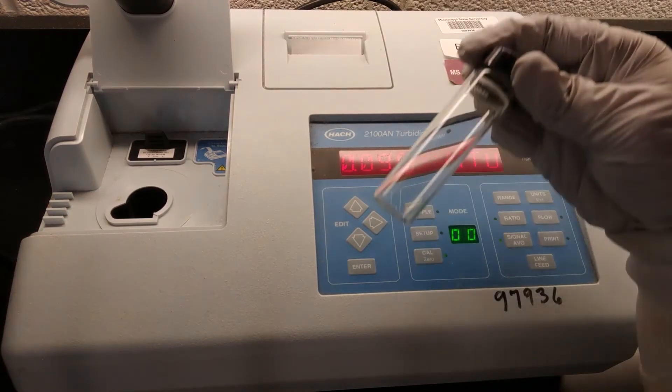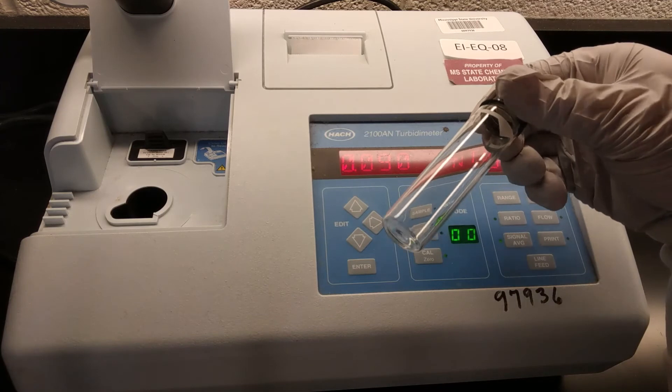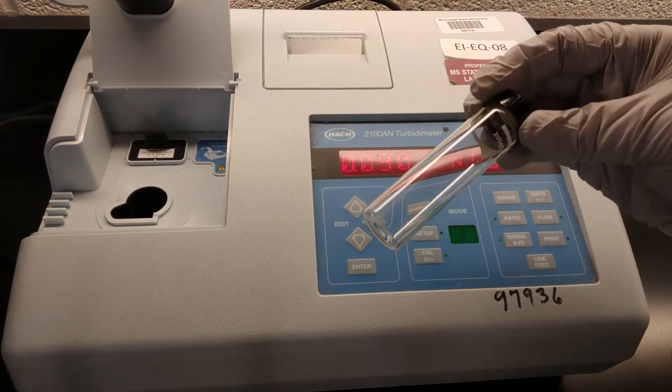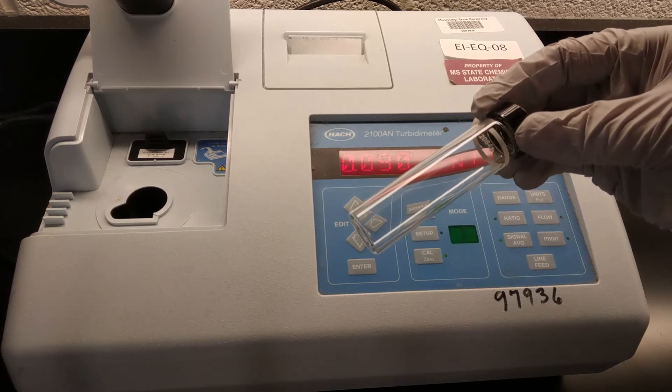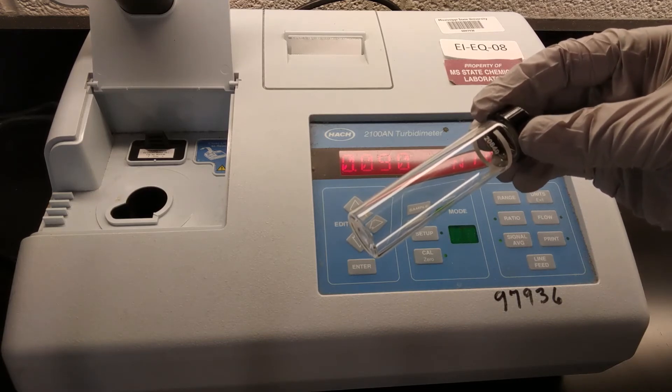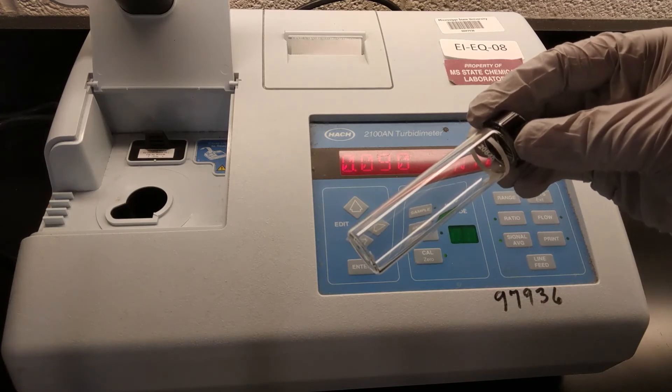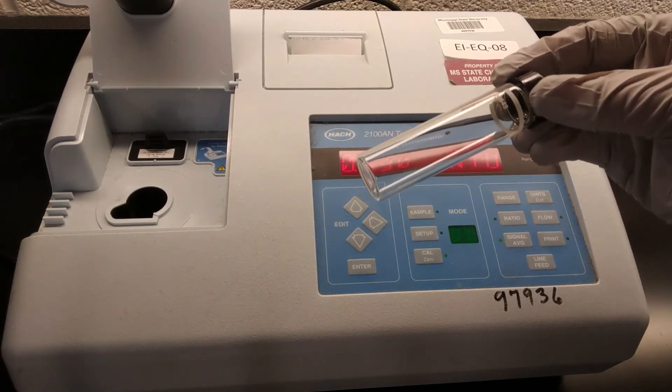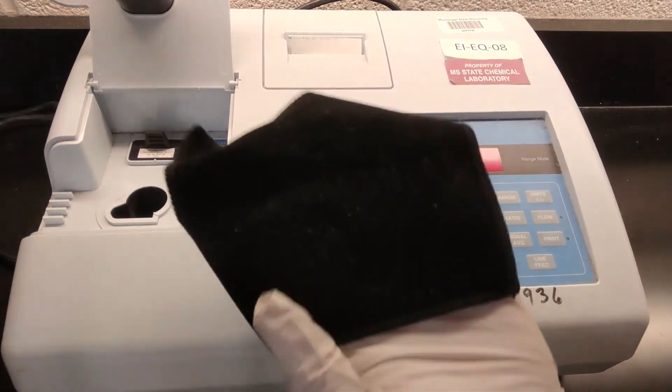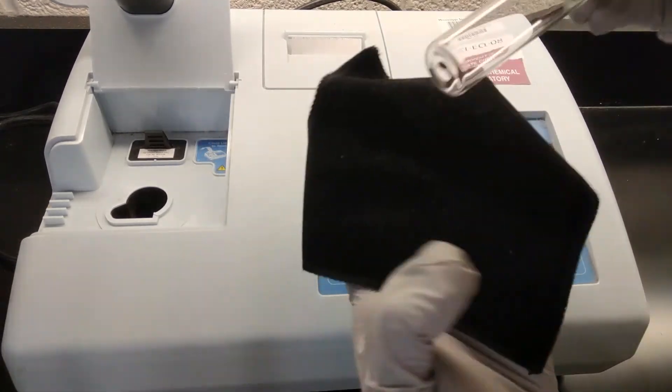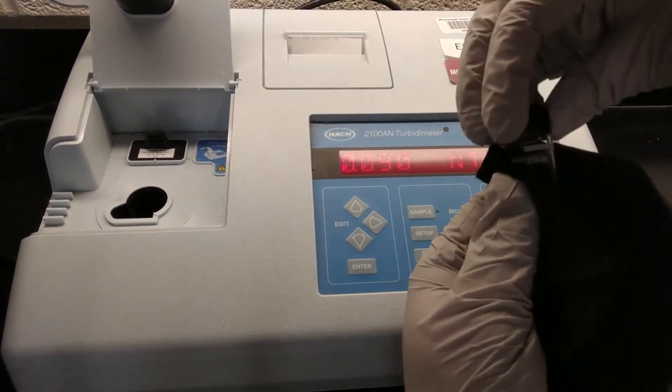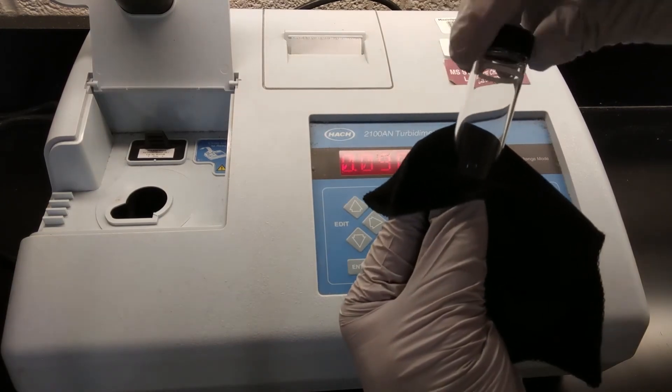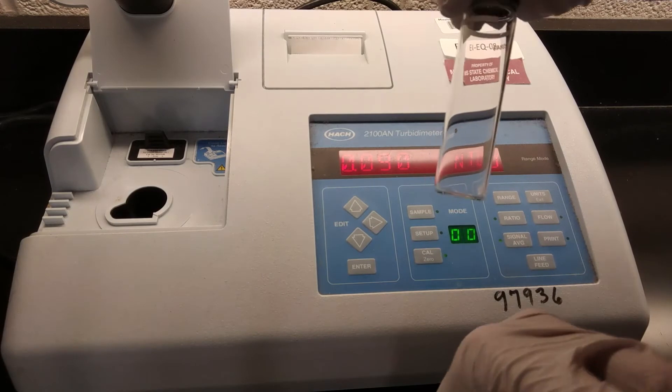One thing that you may notice when you take these cells out of their container is that there might be a little bit of dust or little smudges on the outside of the cell. If that's the case, you do not want to try and wipe it down with a chem wipe or a paper towel. Those could potentially introduce very tiny bits of debris and scratch the glass. And if we scratch the glass, that's going to interfere with the light passing through it. So we have this little microfiber rag that we use to just wipe off the outsides of our cells. Make sure that they look clear. Nothing that you can see with your own eye should really be standing out.